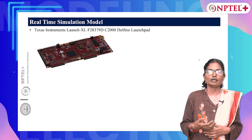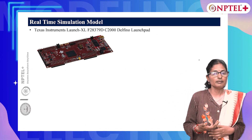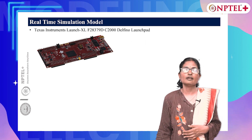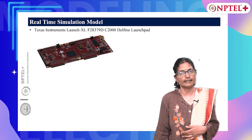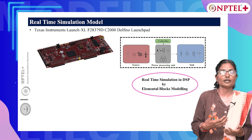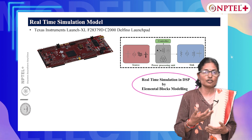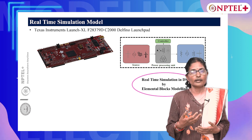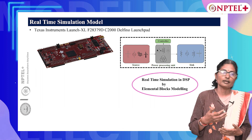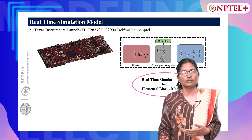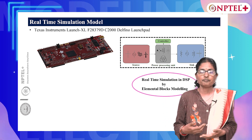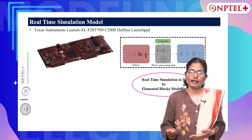The complete system model and the control are implemented using elemental real-time simulations in the Texas Instruments DSP F28379D C2000 Delfino LaunchPad. The modeling and control for the system considered is implemented using the elemental real-time simulation concept in the F28379D. To verify the control implementations, the plant and the controller together are modeled using integral differential equations in the DSP. This is one of the key aspects of this course.